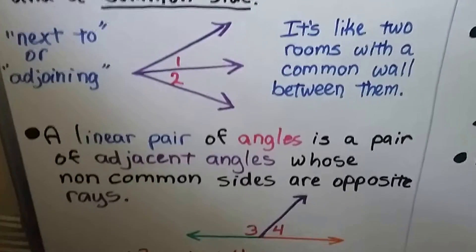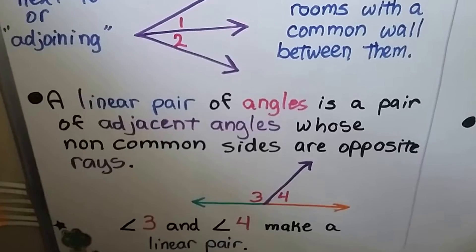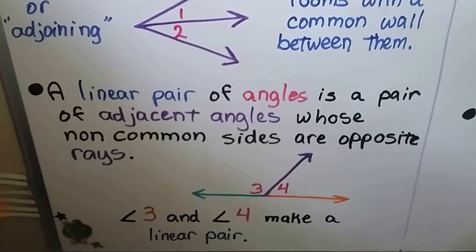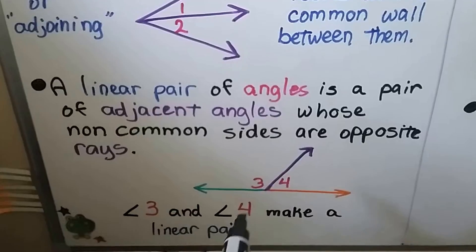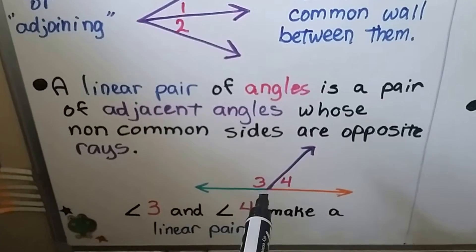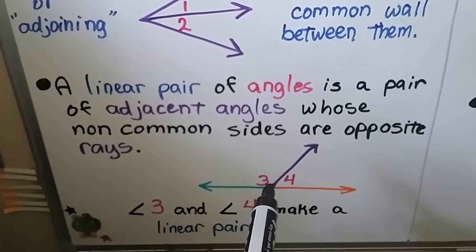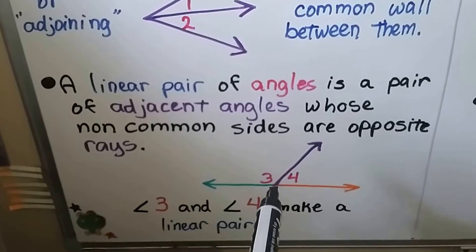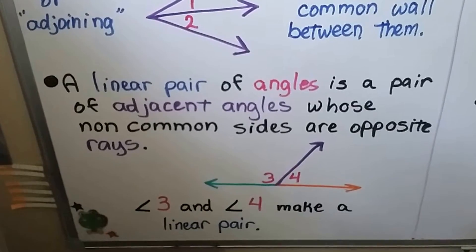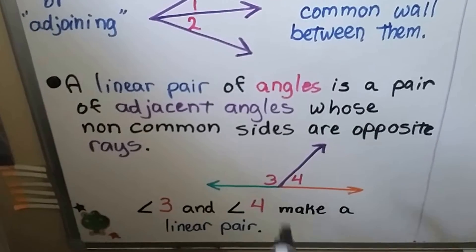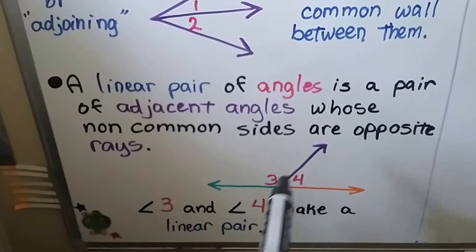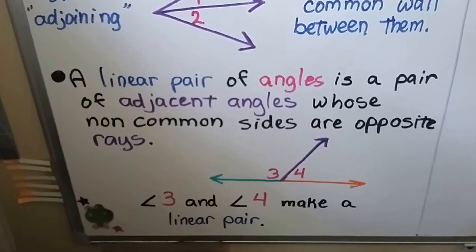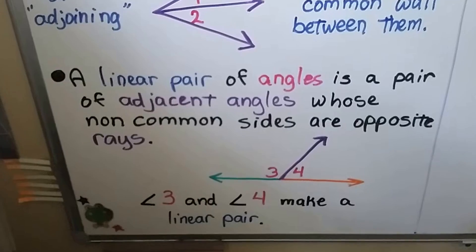A linear pair of angles is a pair of adjacent angles whose non-common sides are opposite rays. The non-common sides go from this point to the left and from this point to the right — they're opposite rays. Here's the ray they have in common. Angle 3 and angle 4 make a linear pair.